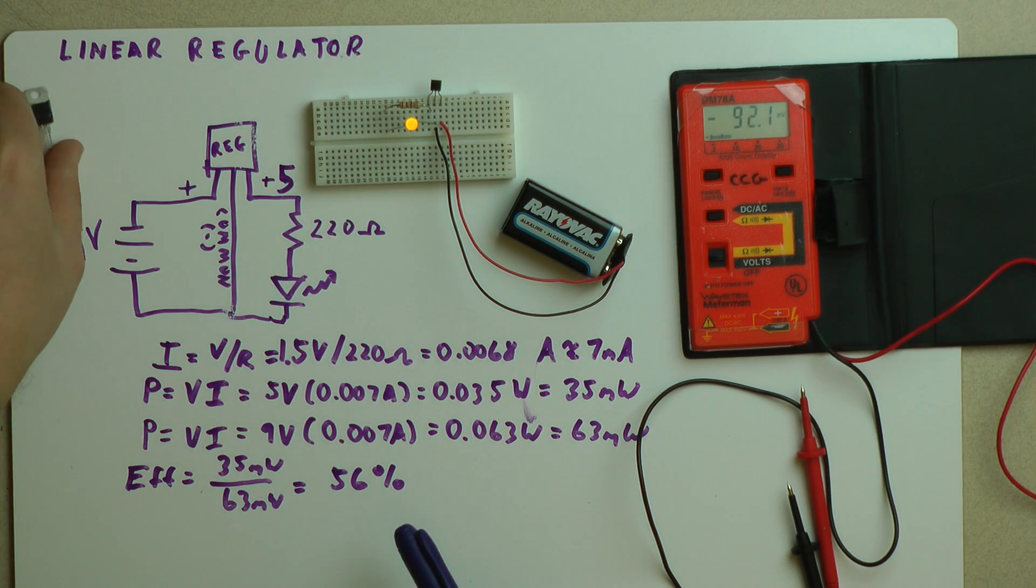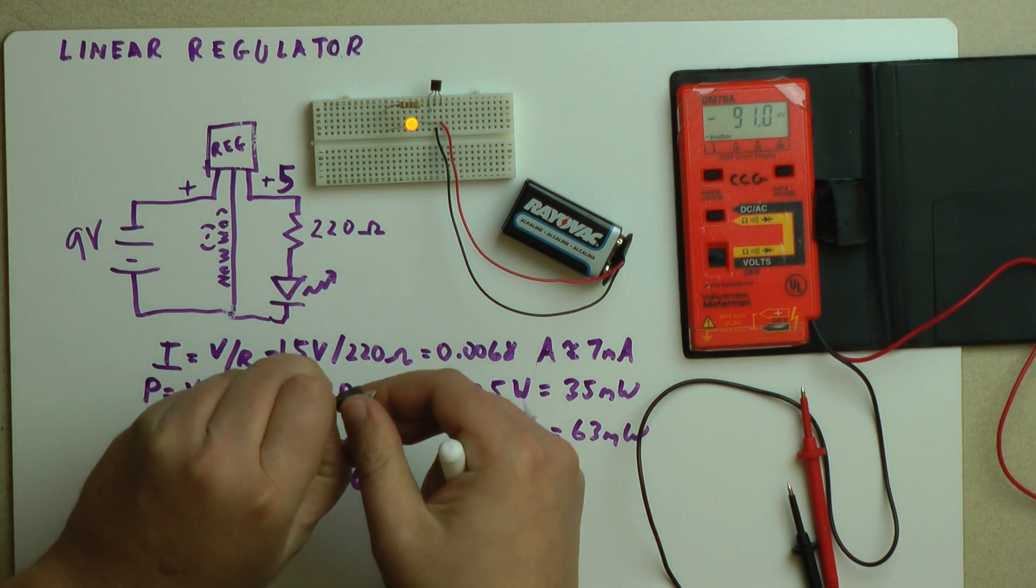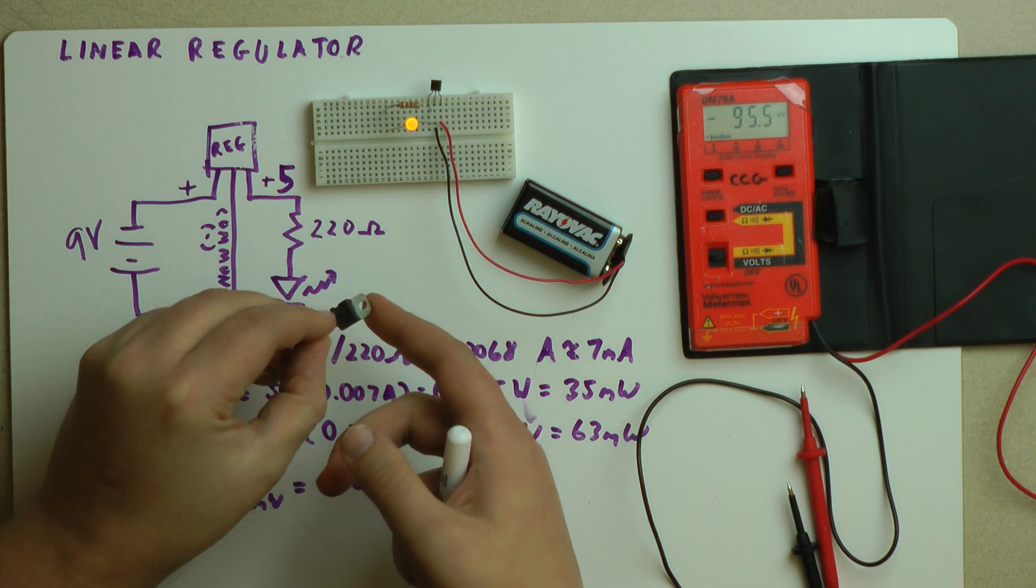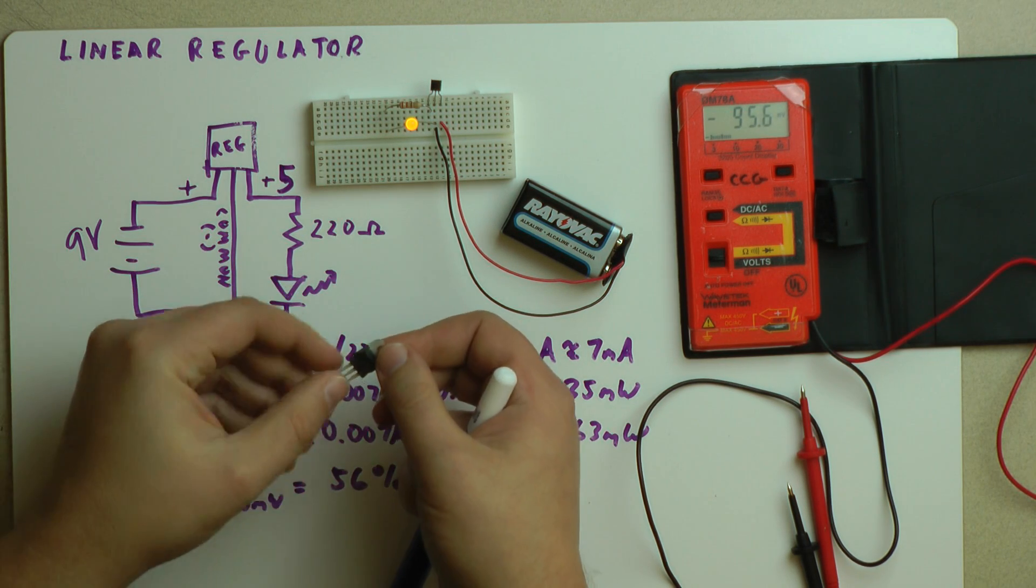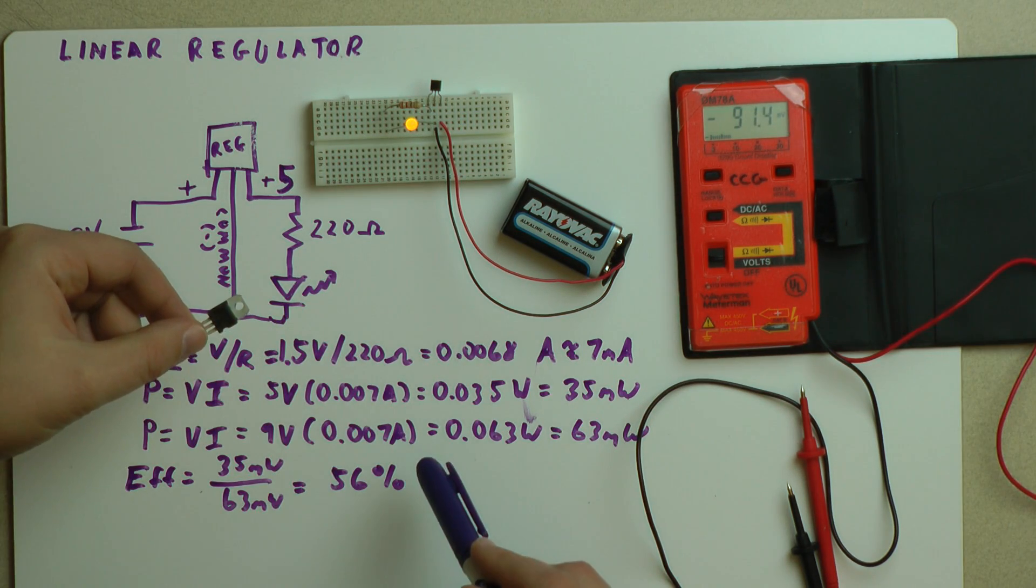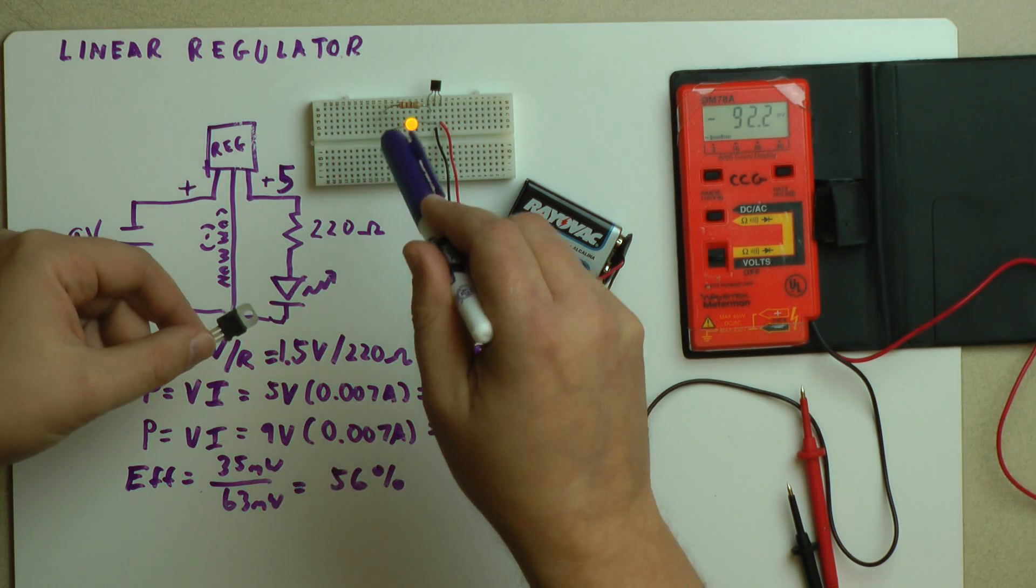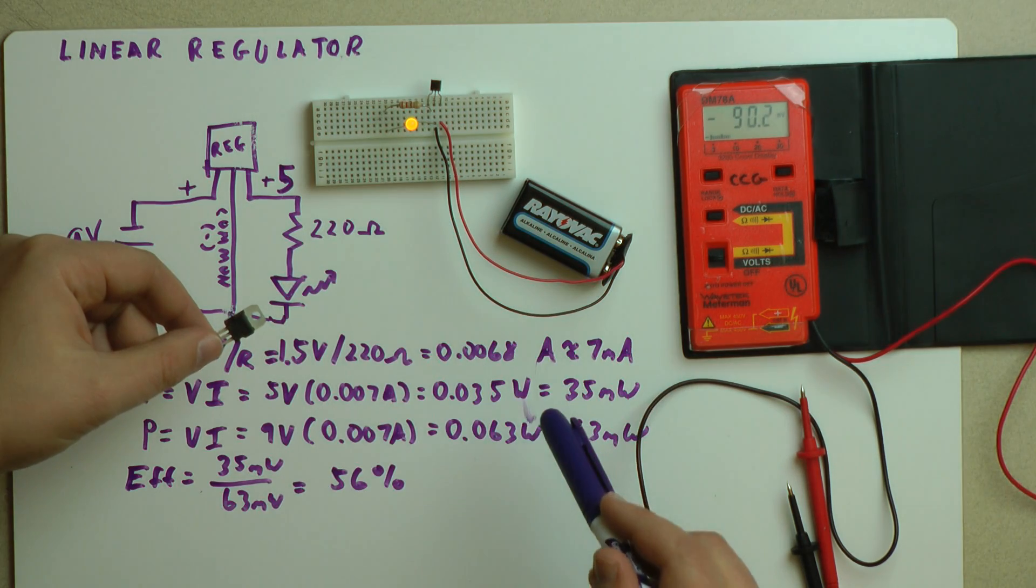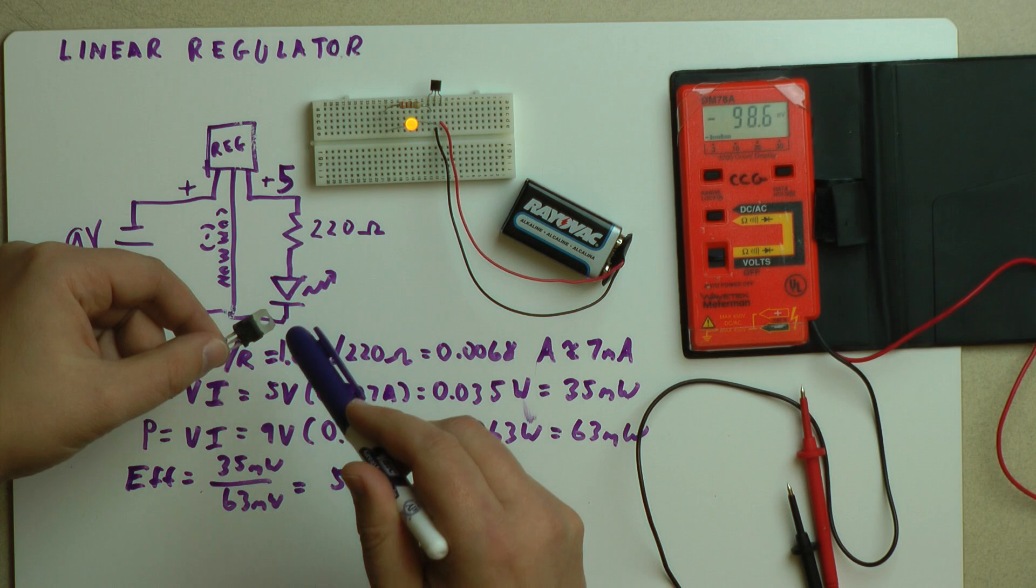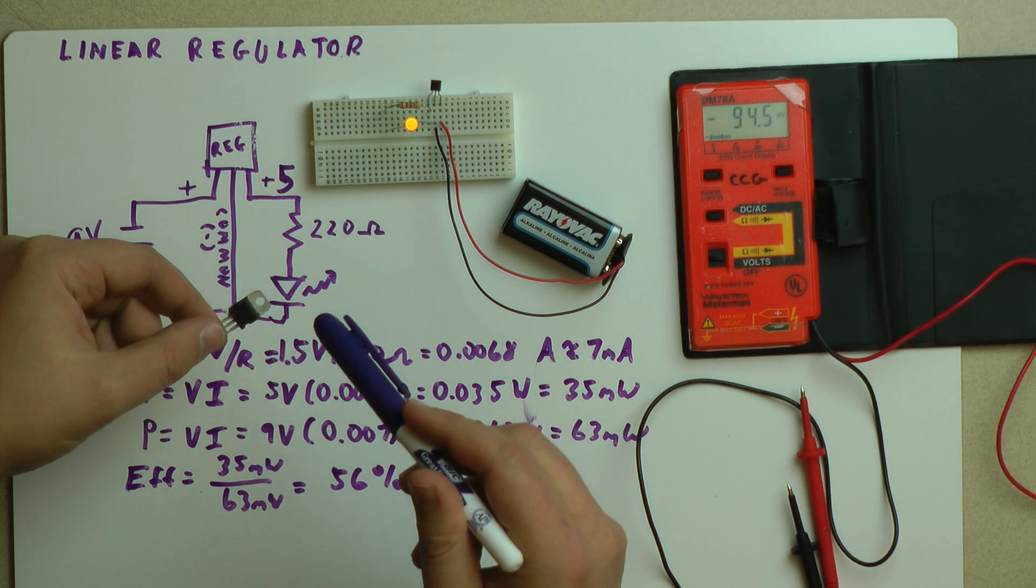And so we've got to actually watch out for that whenever speccing these linear regulators. In fact, most linear regulators will have some sort of metal backing like this one does. This is a 3.3 volt linear regulator. And it will dissipate heat through this metal band. Now if my output current is too big, if my load, whatever I'm trying to run, is too much, that this thing has to dissipate too much heat, it will burn itself up.